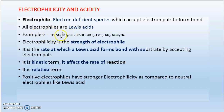Examples of electrophiles include H+, NO+, NO2+, halogen with positive charge, R+ (any alkyl group with positive charge, i.e., carbocation), aluminum trichloride (AlCl3), iron chloride (FeCl3), and SnCl4. In AlCl3, aluminum has an empty orbital to accept electrons; similarly in FeCl3 and SnCl4, the metal atoms have empty orbitals to accept electrons. The positively charged species are electron deficient, so all of these are examples of electrophiles.